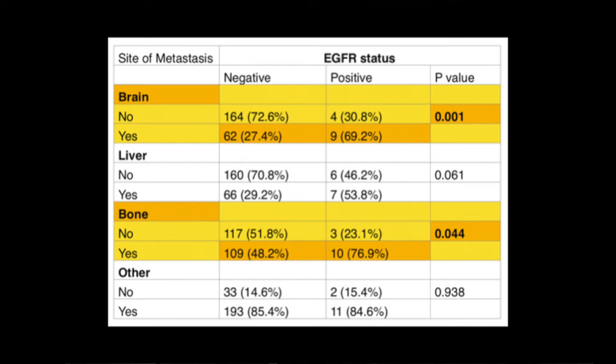As for metastases, bone and brain metastases occurred more frequently in the EGFR group, by 28% and 42%, respectively.